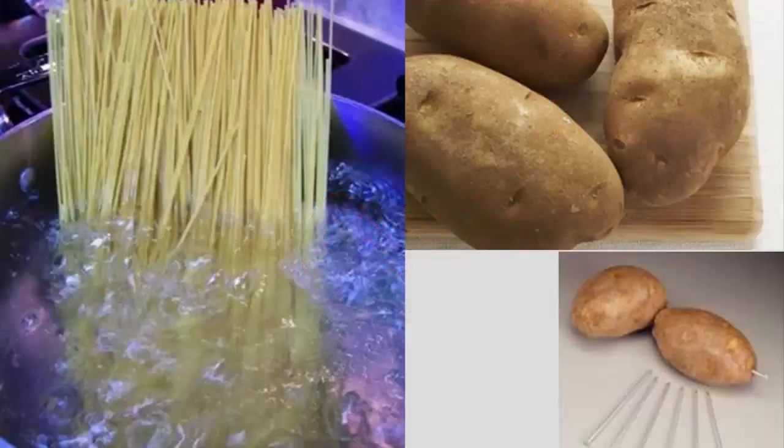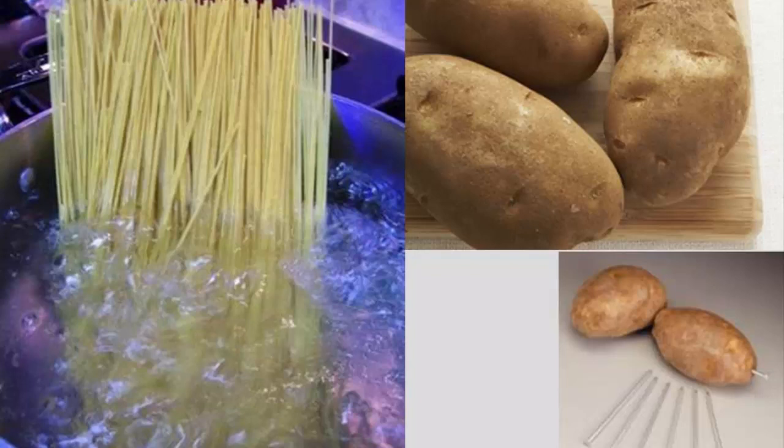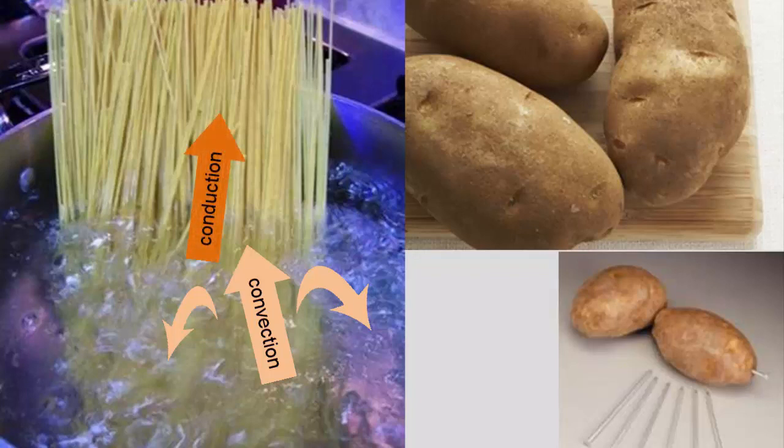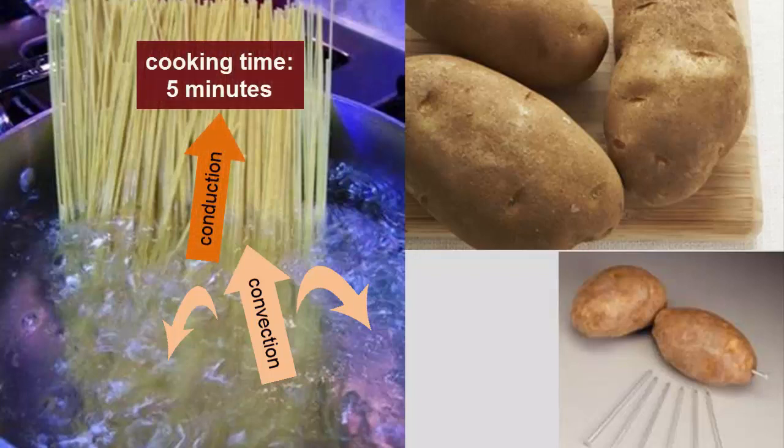We see here real-life examples of the different speeds of conduction versus convection. Hot water convects on our stove and rapidly transfers heat everywhere evenly throughout the water. That heat is now evenly distributed around all the spaghetti noodles, and they can heat up through conduction across the boundary. The spaghetti can be cooked completely in five minutes.